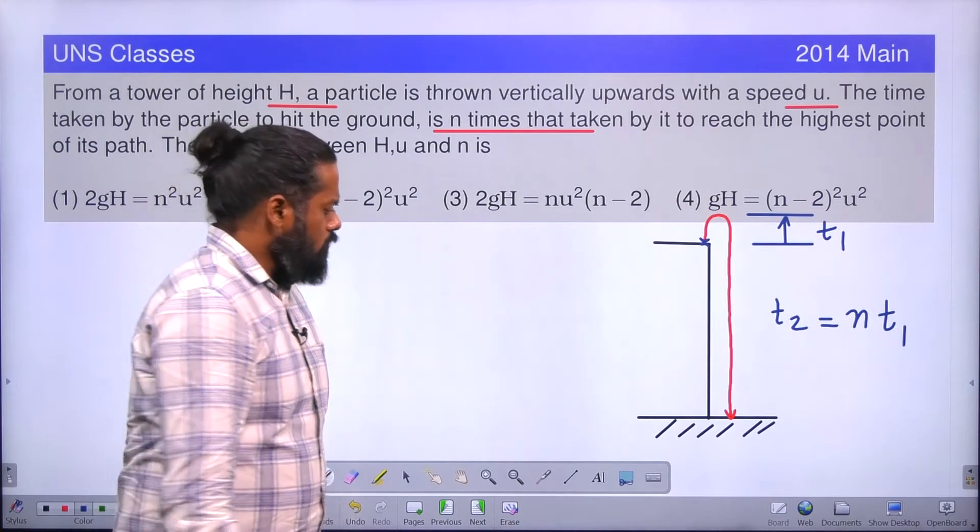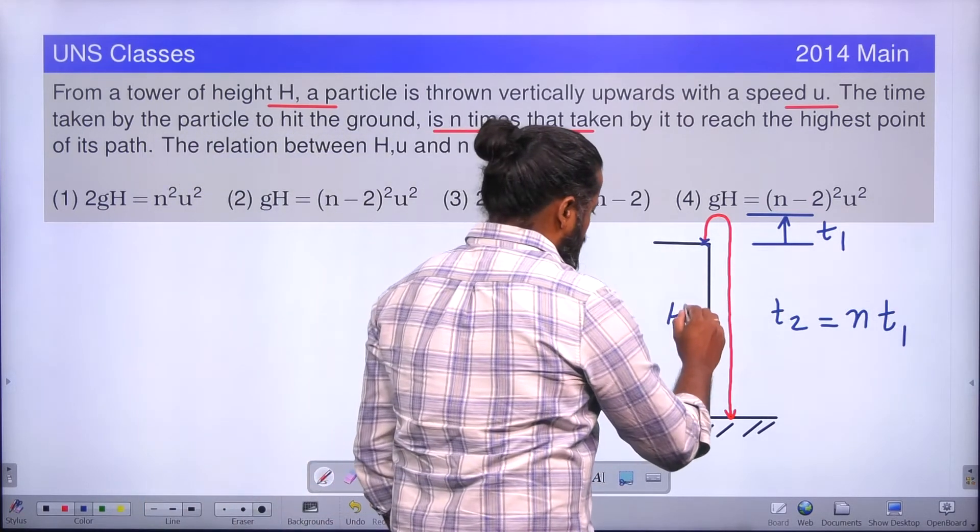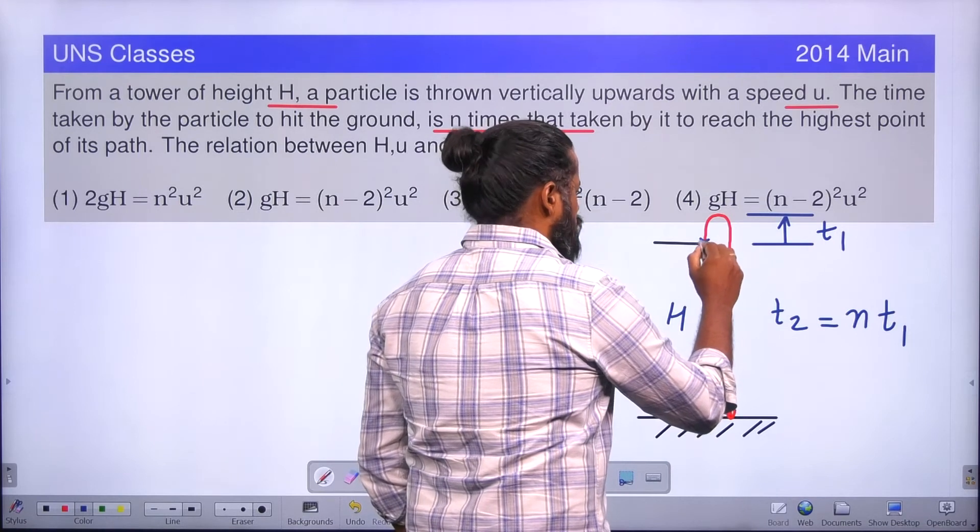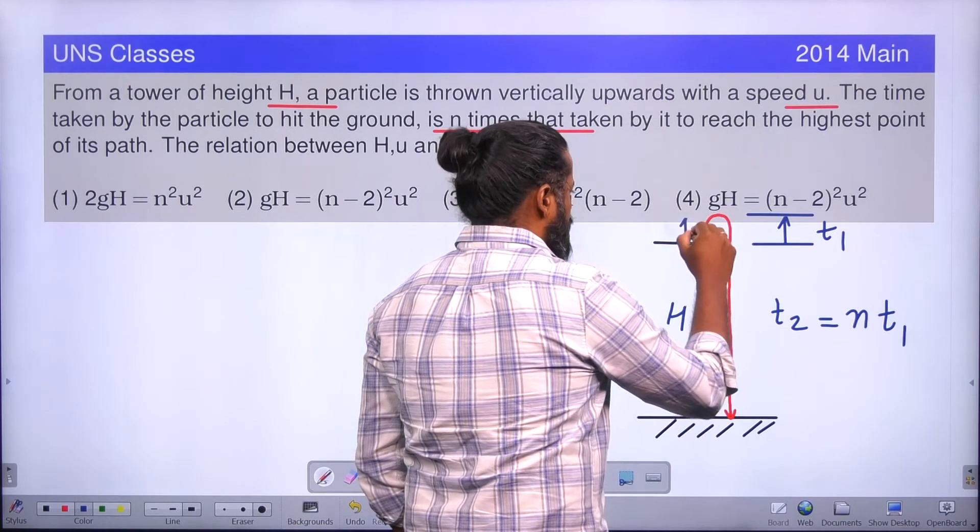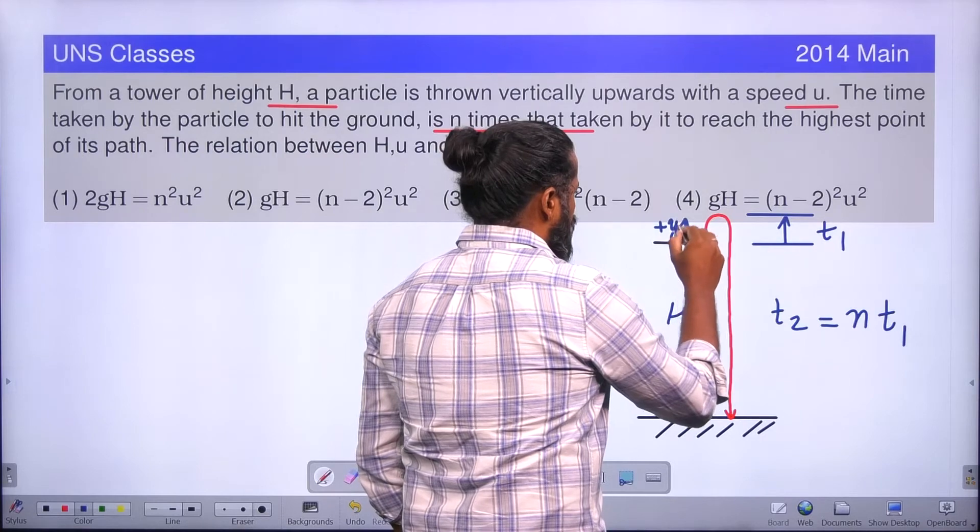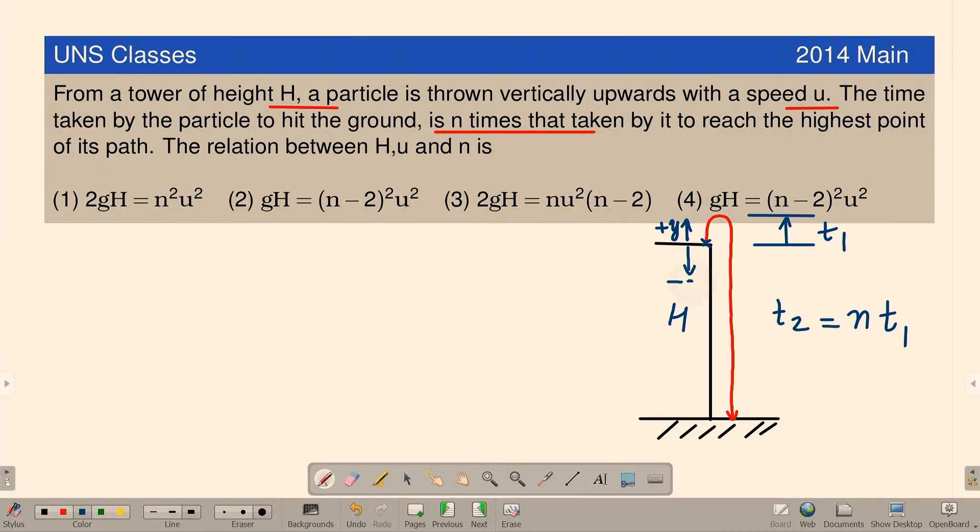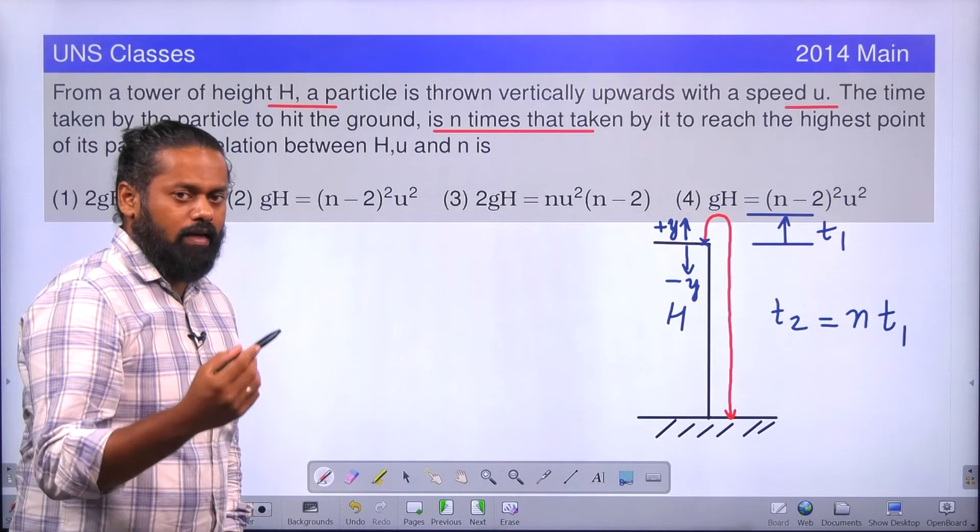Assume the height of the tower is H. And this point I am choosing as origin. Upward direction is plus Y direction, and downward direction is minus Y direction. So this is the origin. If that is the case, we can apply kinematic equation for displacement.